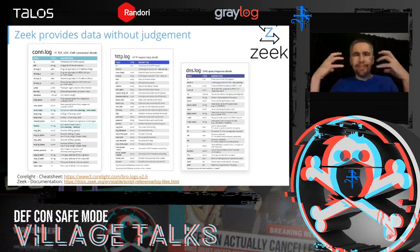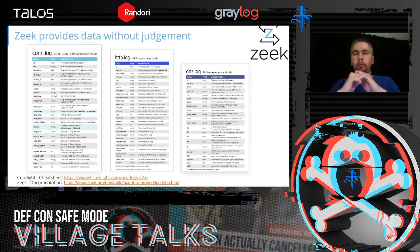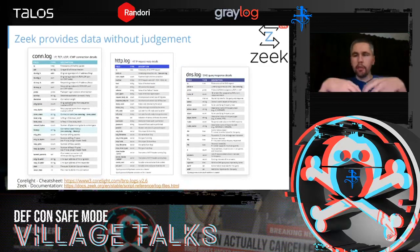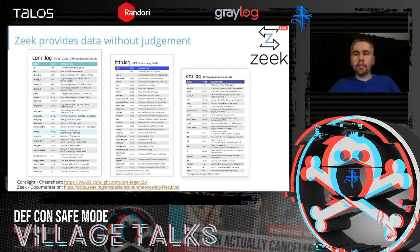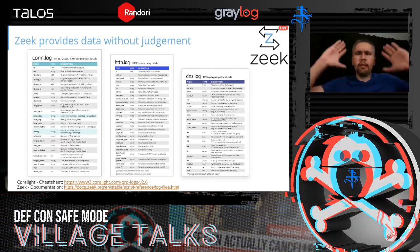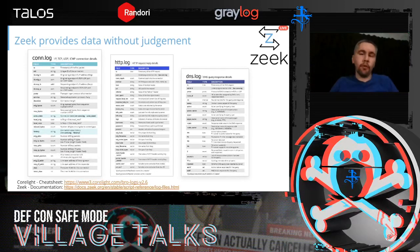The Zeek data is really where the power is. I'm going to use three example logs to start that conversation. On the left is the conn log — the connection log. You've seen NetFlow with IP addresses, ports, protocols, timestamps — high-level information? That's basically the conn log. Every single connection will appear in the conn log.